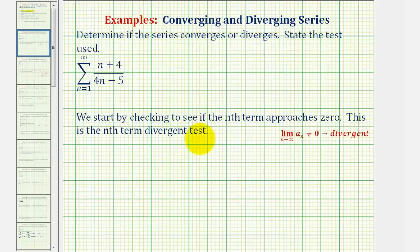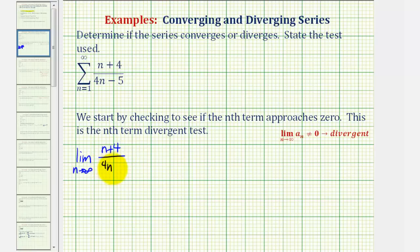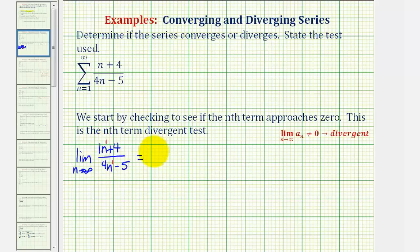So let's start by applying the nth term divergent test. First, we'd have the limit as n approaches infinity of the quantity n plus four divided by the quantity four n minus five. Now there are several ways to determine this limit. The shortcut method is to recognize that the degree of the numerator and denominator are the same — they're both degree one — and therefore this limit would be equal to the ratio of the leading coefficients. Since n is equal to one n, the ratio of the leading coefficients would just be one-fourth.